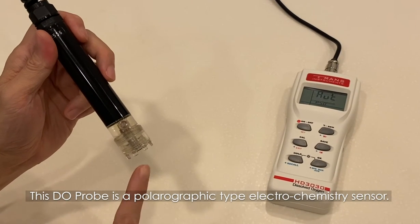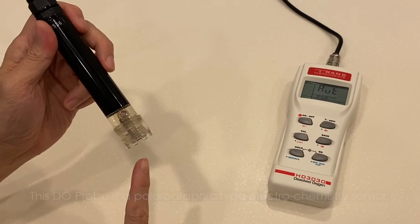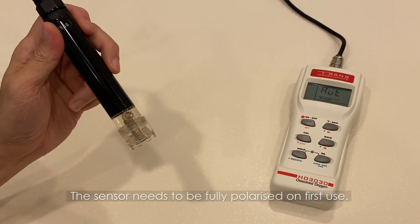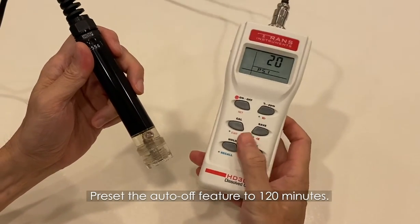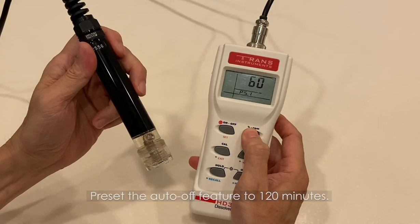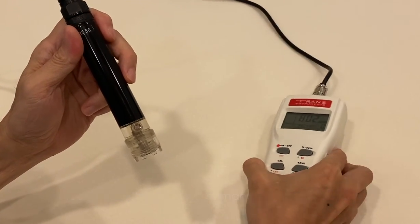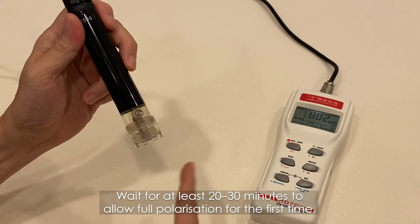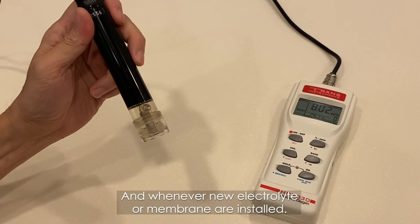This DO probe is a polarographic type electrochemistry sensor. The sensor needs to be fully polarized on first use. Pre-set the auto-off feature to 120 minutes. Please read the operation manual for more details. Wait for at least 20 to 30 minutes to allow full polarization for the first time and whenever new electrolyte or membrane are installed.